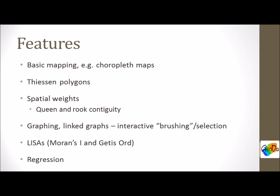Its features include being able to create basic maps, including choropleth maps, creating Thiessen or Voronoi polygons, spatial weights — which we'll talk about later — including queen and rook contiguity, which require an ArcInfo or ArcGIS Advanced license, graphing, including linked graphs so that you can interactively brush and select features and see their characteristics, LISAs, and regression. We'll also talk about the difference between the two LISAs: Moran's I and Getis-Ord.